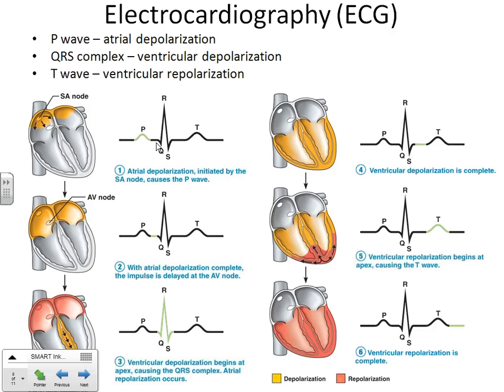Why does the QRS look so crazy — down, up, down? There are two reasons. First: the ventricles contract with a whole lot more force than your atria. The muscles are bigger, they have a lot more work to do. They really have to contract to force the blood out through the larger vessels to the body. That's why you see how tall that R peak is compared to the P wave.